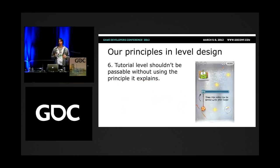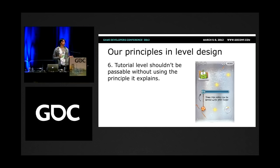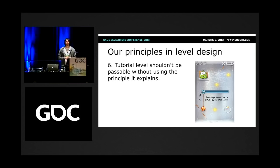Another thing Matt talked about: tutorials are a very important part, and images work even better than text. But another important thing we realized is that if we're trying to explain something to the player but there's still space to complete the level without using that principle, sometimes players will just skip it and get frustrated later when they need that knowledge. People need a reason to learn. In our case, the reason is usually that they can't complete the level until they try what we want them to try. In most cases they don't really need to read the text — they can just play around with the objects and they'll find out how it works.